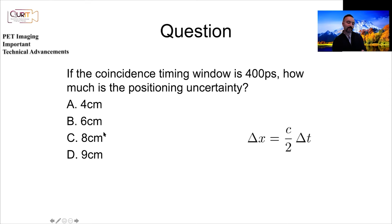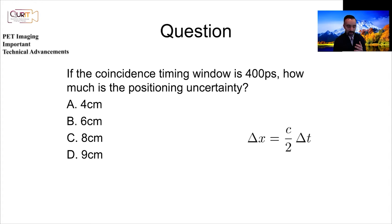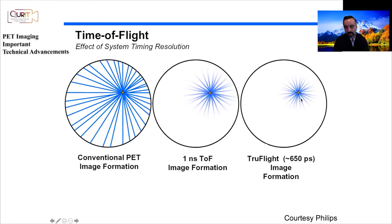The key point is that current timing windows give centimeter-scale uncertainty — not millimeters. So we are not narrowing down to one or two millimeters, we still need to do reconstruction, and we are not directly improving spatial resolution. What we are doing is propagating noise less. With a 200-picosecond camera, the positional uncertainty drops to about 3 centimeters.